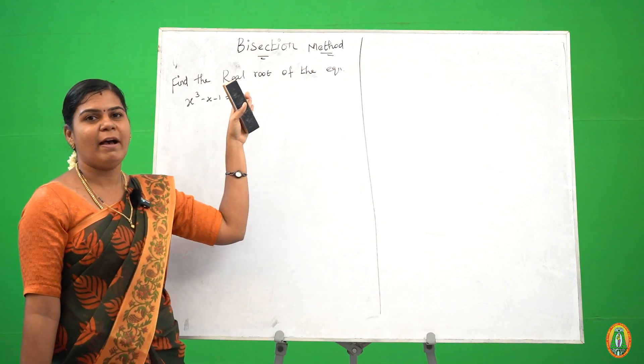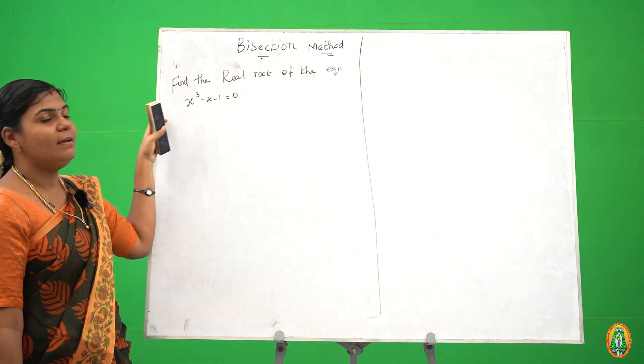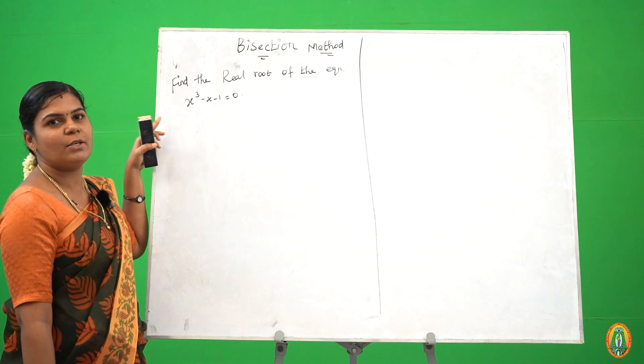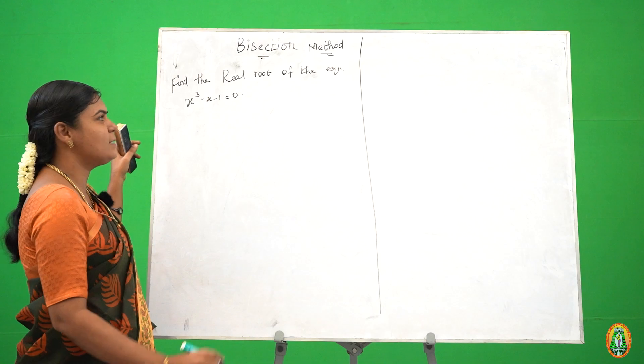So how to find the root using bisection method in this equation. The problem is: find the real root of the equation x cubed minus x minus 1 is equal to 0.